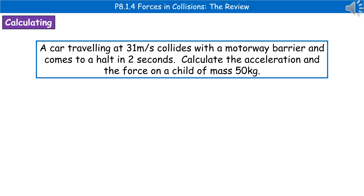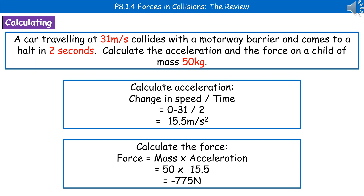Another example: a car travelling at 31 metres per second collides with a motorway barrier and comes to a halt in 2 seconds — calculate the acceleration and the force on a child of mass 50 kg. This is a two-stage calculation. First, recall the acceleration formula: acceleration equals change in speed divided by time. We're going from 31 metres per second to 0, so the change in speed is minus 31, divided by 2 seconds, giving an acceleration of minus 15.5 metres per second squared.